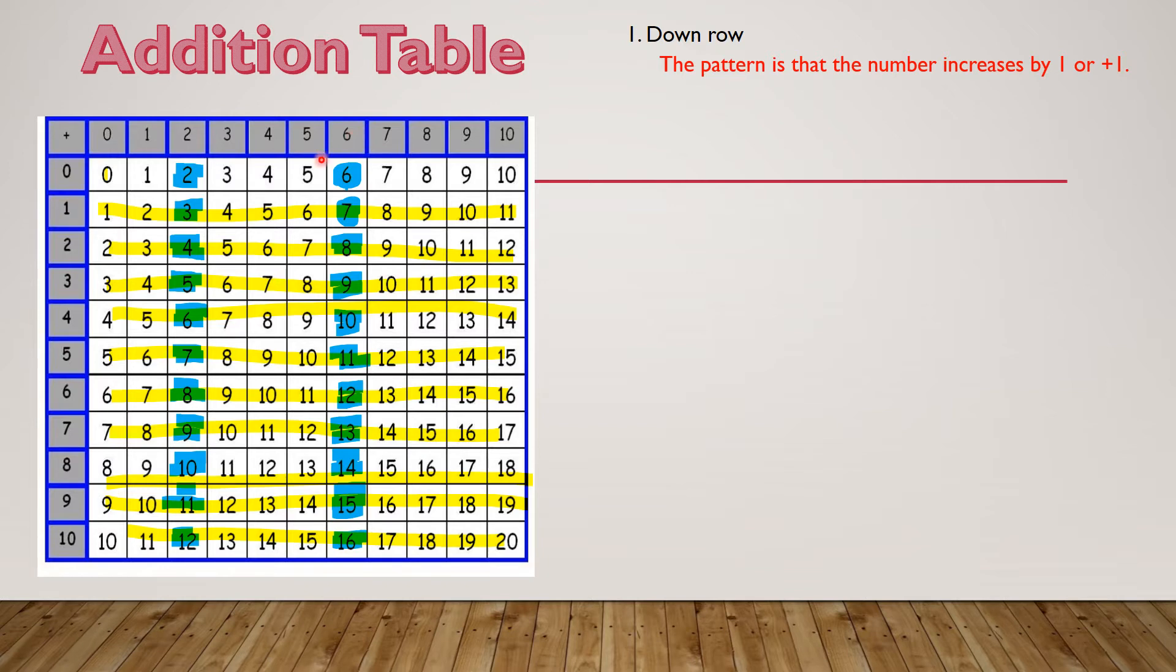So the pattern is that the number increases by one. We go from six, seven, eight, nine, ten, eleven, twelve, thirteen, fourteen, fifteen, sixteen. If I start here at nine it should increase by one: 10, 11, 12, 13, 14, 15, 16, 17, 18, 19. So that's the pattern we see going down the row.